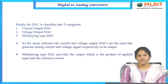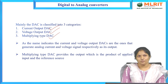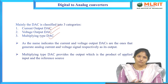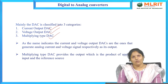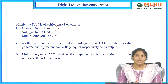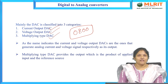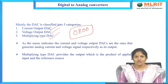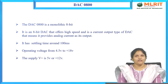DAC is mainly classified into three categories: current output DAC, voltage output DAC, and multiplying type DAC. Current output DAC and voltage output DAC give outputs in the format of current and voltage respectively. If you need a voltage output from a current output DAC, a specific op-amp circuit is used to convert the current output to a voltage output. One example of a current output DAC is the DAC0800, which we are discussing in this presentation. The multiplying type DAC produces an output that is the product of the applied voltage with the reference voltage.